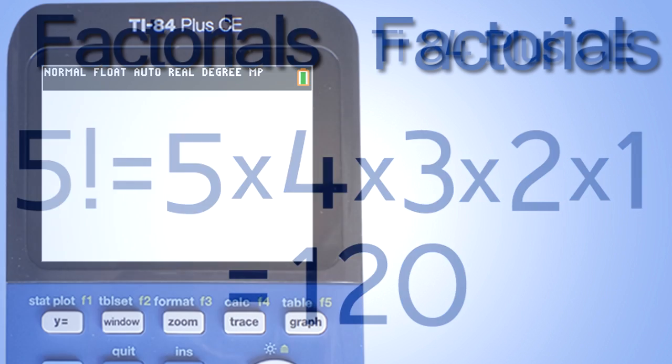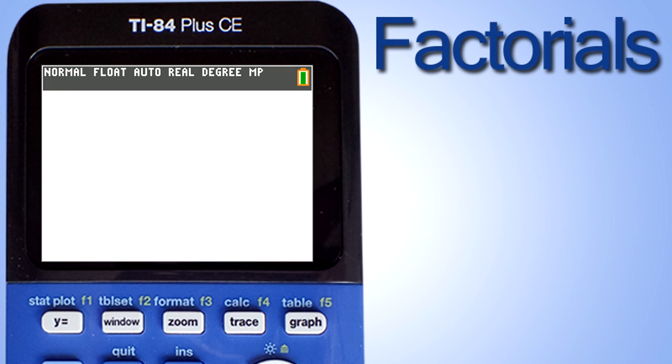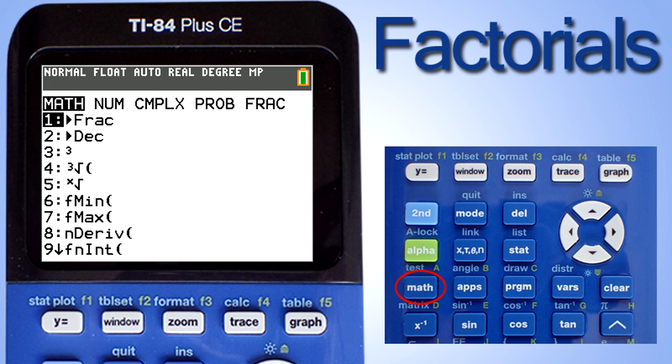Now let's see how to calculate factorials on the TI84 plus CE calculator. We are going to calculate 5 factorial. First enter the number 5. Now we want to enter the factorial symbol after the 5. To do that, press the math key here. This menu will pop up.